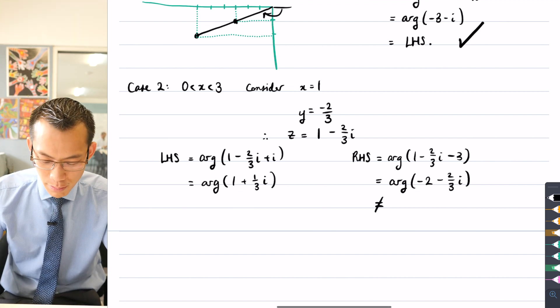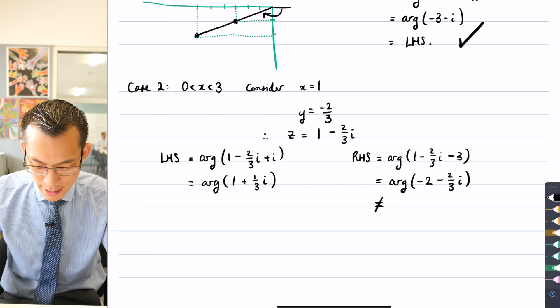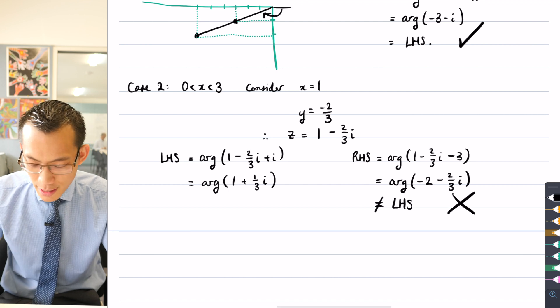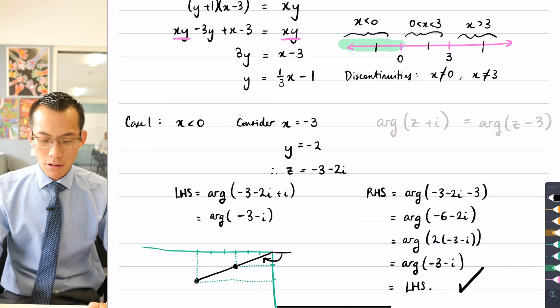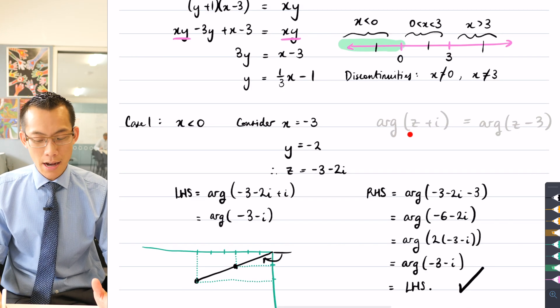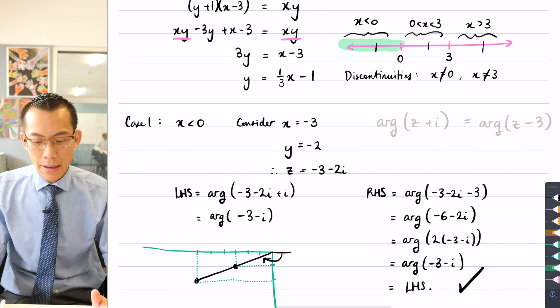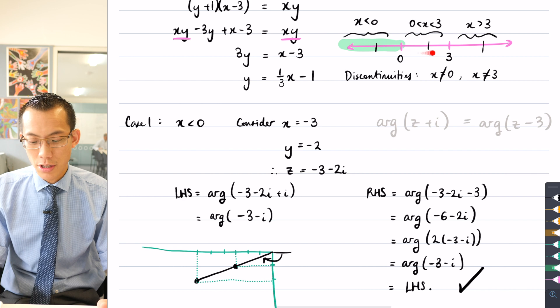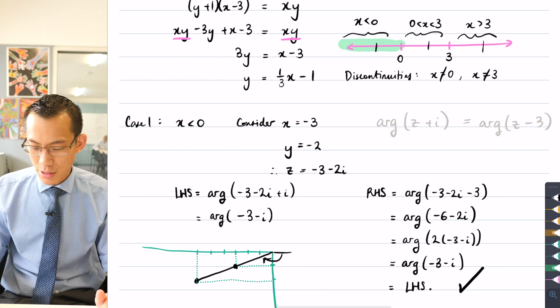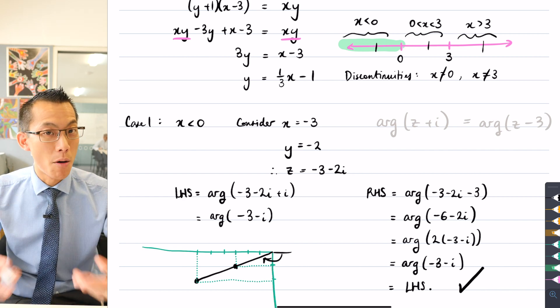So therefore, this cannot possibly equal the left-hand side. So this is a dud, right? This is how we algebraically confirm that, oh, okay, this particular equation here is what we must satisfy. But numbers in this range, like x equals one, you can test any other number in this range, you'll get the same result. They don't work, right? So you're going to have to say that's not part of your domain.